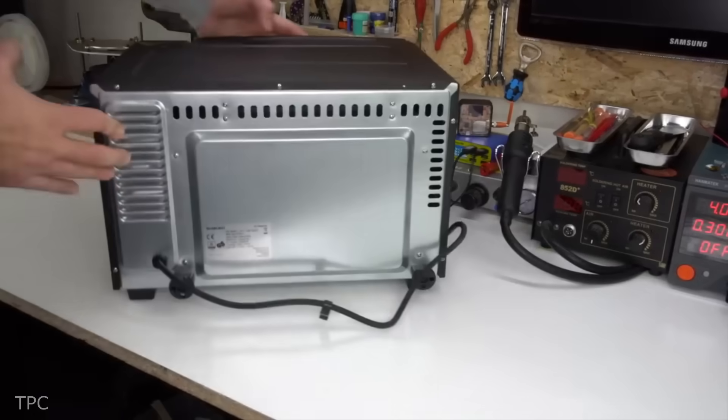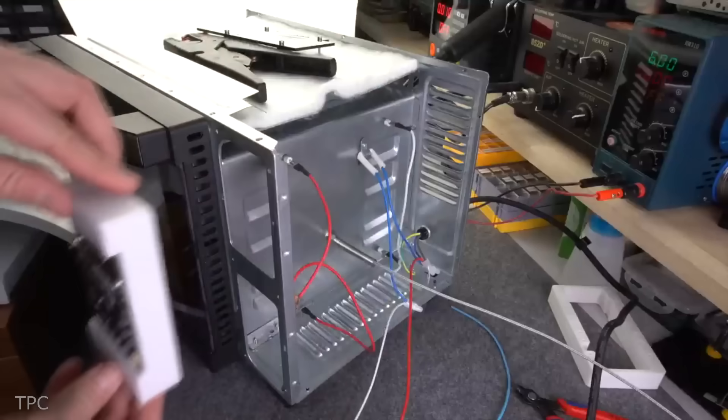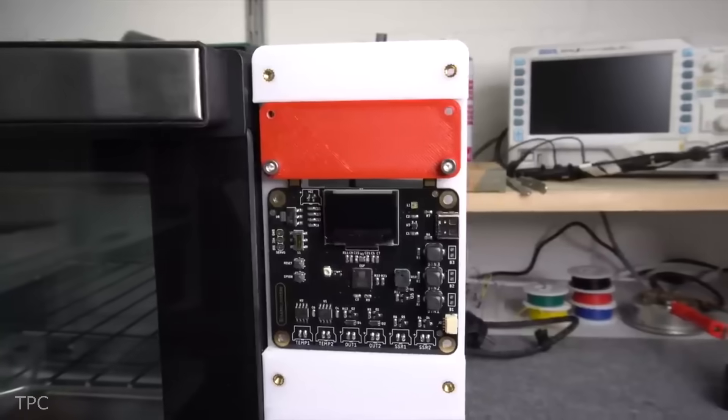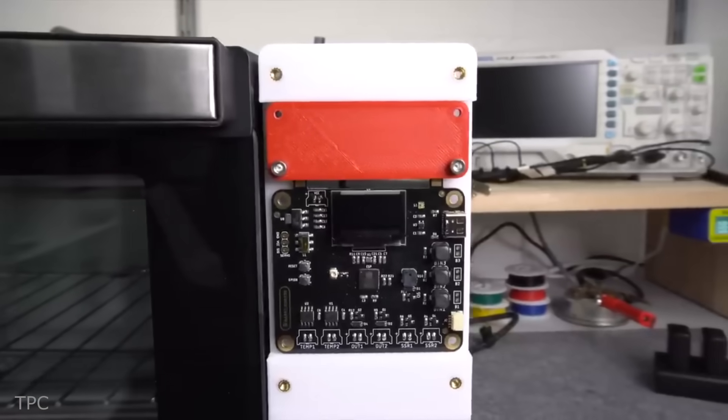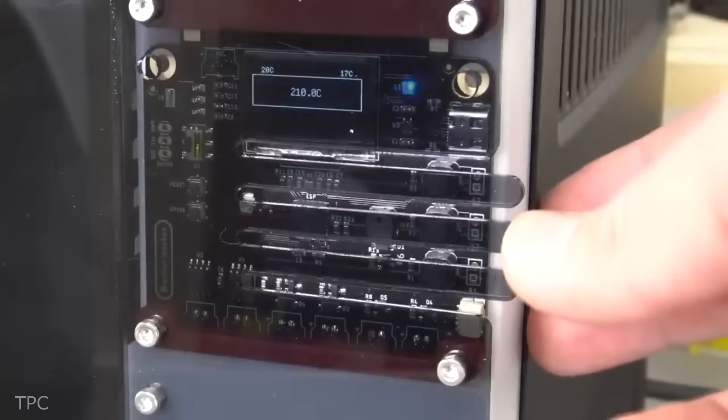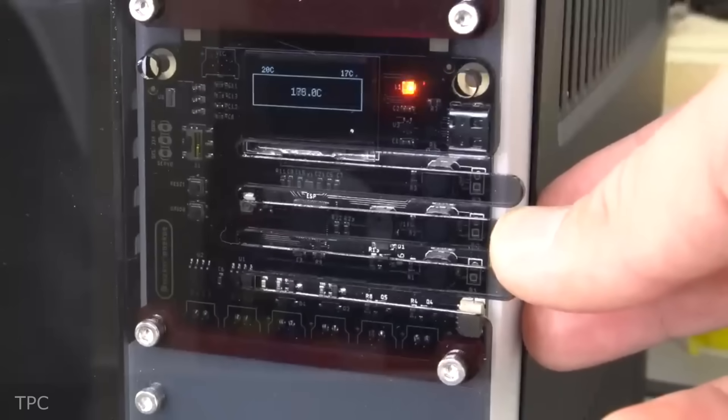He started by removing the oven's original control knobs and replacing them with a custom-designed PCB. This PCB features sensor inputs, outputs, buzzers, and various SMD components to handle reflow operations. It also includes an OLED display and three push buttons, allowing the oven to function as a standalone device.